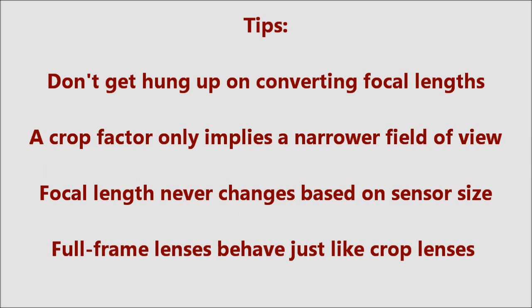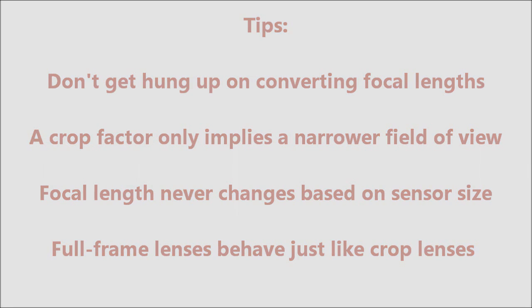This back and forth conversion is what causes all the confusion. Therefore, the best thing to do is to forget all about the conversion and just look at the focal length of your lens, as this is a fixed optical property. No matter what 50mm lens you mount on an APS-C camera, you always get the same field of view — it doesn't matter if the lens was originally designed for a larger format, like full frame or even medium format. The same goes for every other focal length out there.